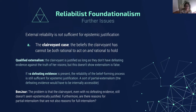One response to the clairvoyant case is something called qualified externalism. The qualified externalist says the clairvoyant is justified as long as they don't have defeating evidence against the truth of their visions. The idea is the clairvoyant would fail to have justification if they had reasons showing they weren't justified in believing what might happen tomorrow. But if they don't have such reasons, they're fine. So as long as they don't have defeaters, they're good. If no defeating evidence is present, the reliability of the belief-forming process is still sufficient for epistemic justification, according to the qualified externalist — giving you a kind of partial externalism, because the defeating evidence would have to be internally accessible.